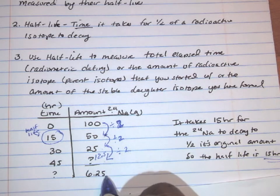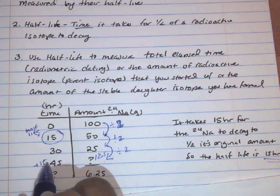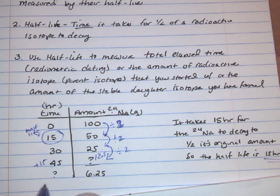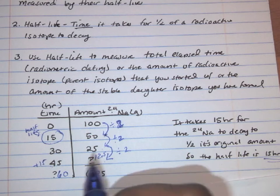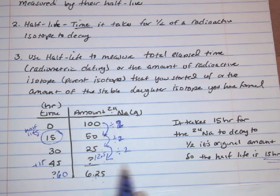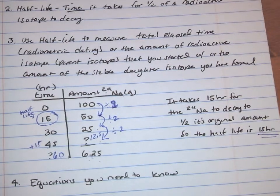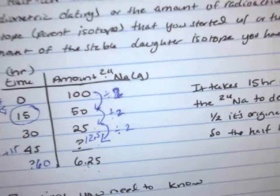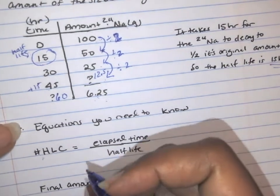So how long will it take to get down to 6.25 grams? Since the Half-Life is every 15 hours, you just add 15 hours to the last time of 45, giving you 60 hours. So in 60 hours you will have 6.25 grams of sodium left — starting from 100 grams. Now, in this unit you will have to do some calculations, and these are the equations you'll need to know.